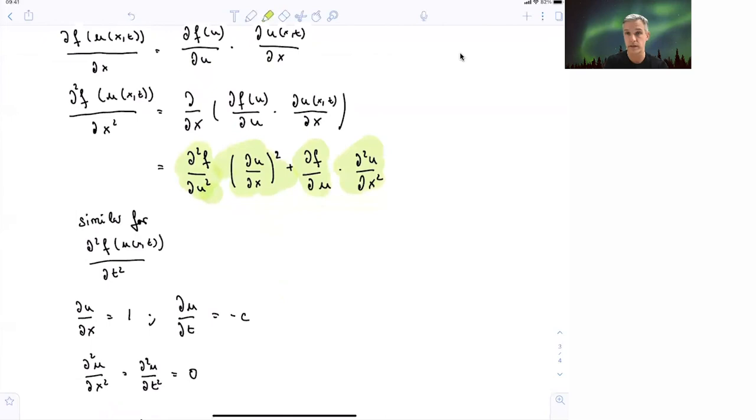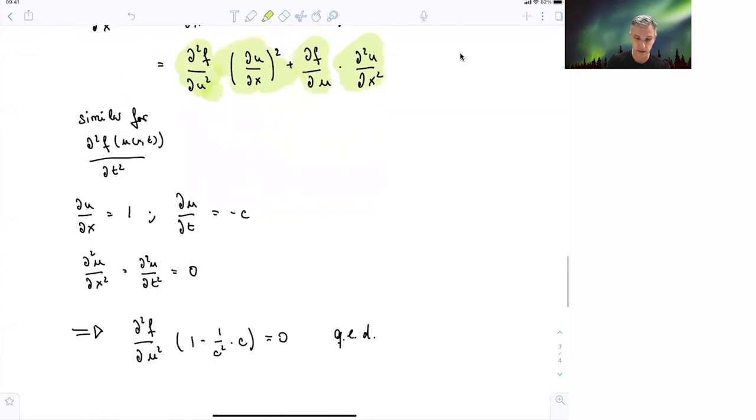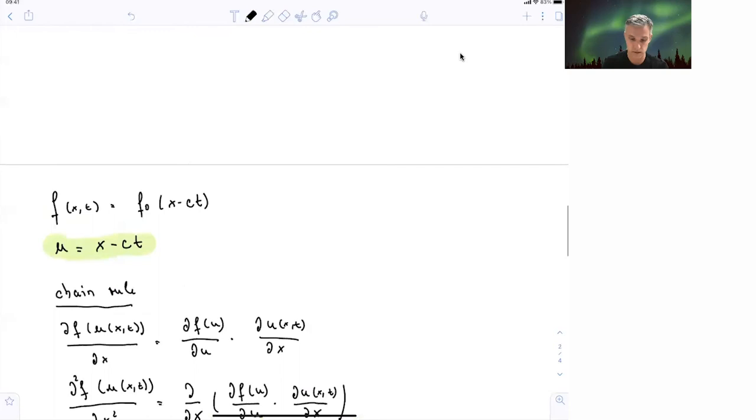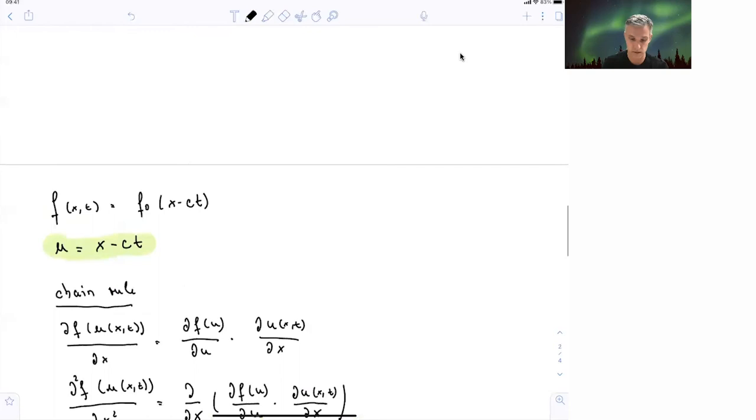I will use this. Second derivatives of u with respect to x and t are all zero. If I put this in now in my equation, I find second derivative of f with u times 1 minus 1 over c square times c square is equal to zero. And since this is always zero, we have just proven that any sort of function which I can build the derivative of, which is of the form x minus ct, solves that equation.